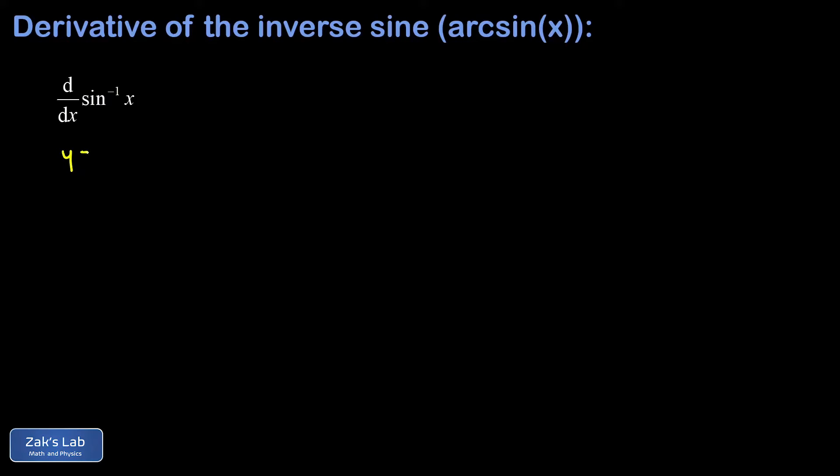What we're going to do is say y equals the inverse sine of x. We read that as the angle whose sine is x. So when we turn this around, we get sine of y equals x, because y is the angle whose sine is x.